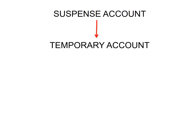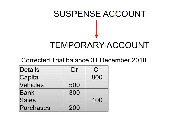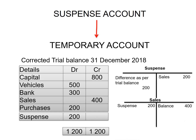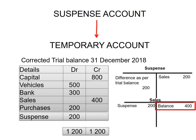When the error is detected and corrected, the suspense account's balance will return to zero. Let's have a look at our corrected trial balance from the previous example, where there is a suspense account with a value of $200, and that made our trial balance balance. There is the $200 representing the difference as per our trial balance, and we have a balance of $400 for sales.